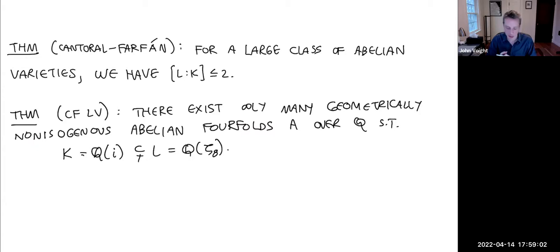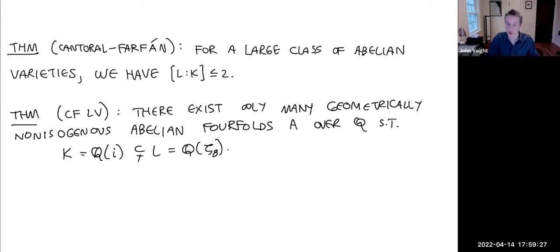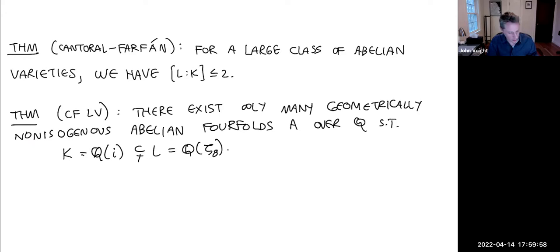Types II and III are distinguished by whether the quaternionic multiplication is totally definite or totally indefinite. The Type III case — definite quaternion multiplication — is weird: it's close to being CM but not CM, and that's really the right place to look. To write down a Type III abelian variety explicitly, we need endomorphisms by a definite quaternion algebra, and the best way is to use Jacobians of curves with automorphisms.